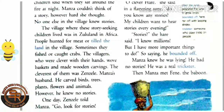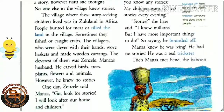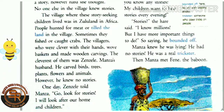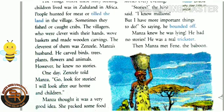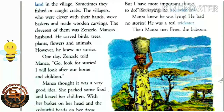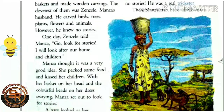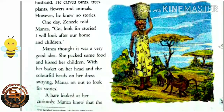The cleverest of them was Zenzel, Manza's husband. He carved birds, trees, plants, flowers, and animals. However, he knew no stories. One day Zenzel told Manza, 'Go look for stories — I will look after our home and children.' Manza thought it was a very good idea.